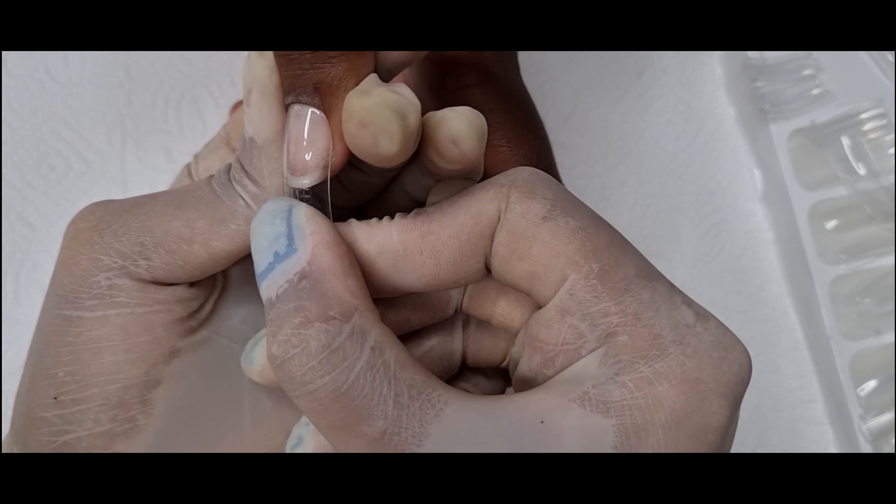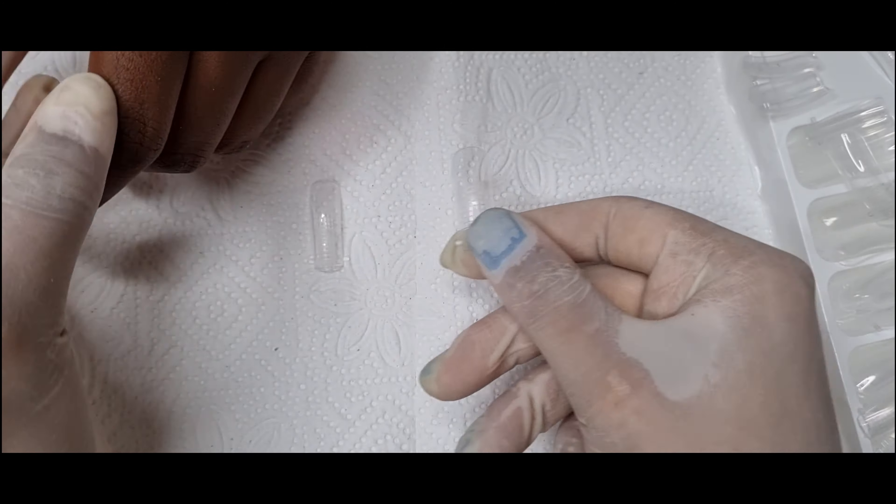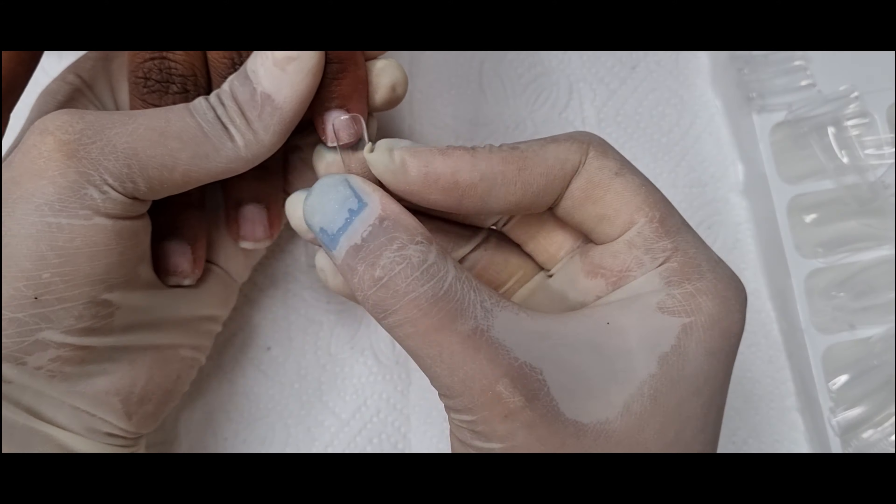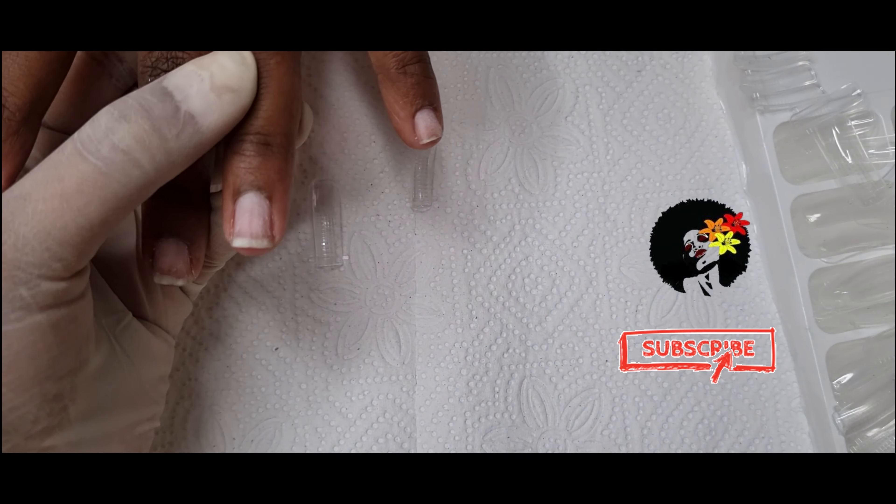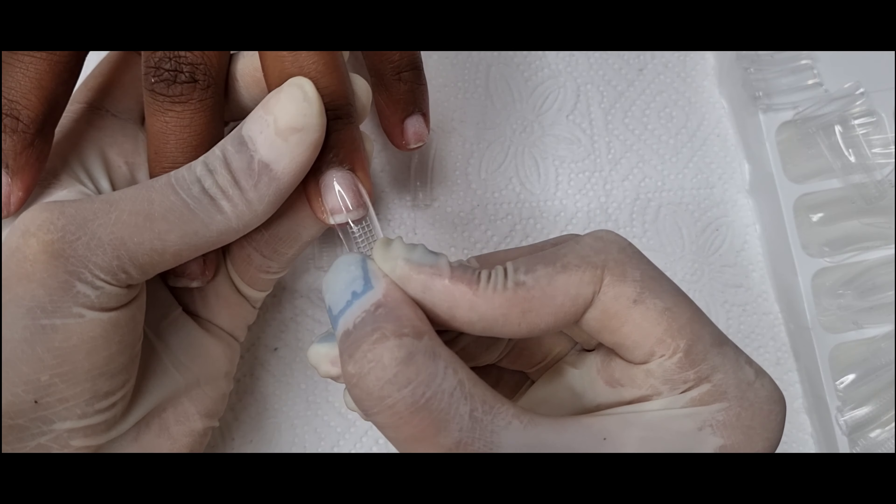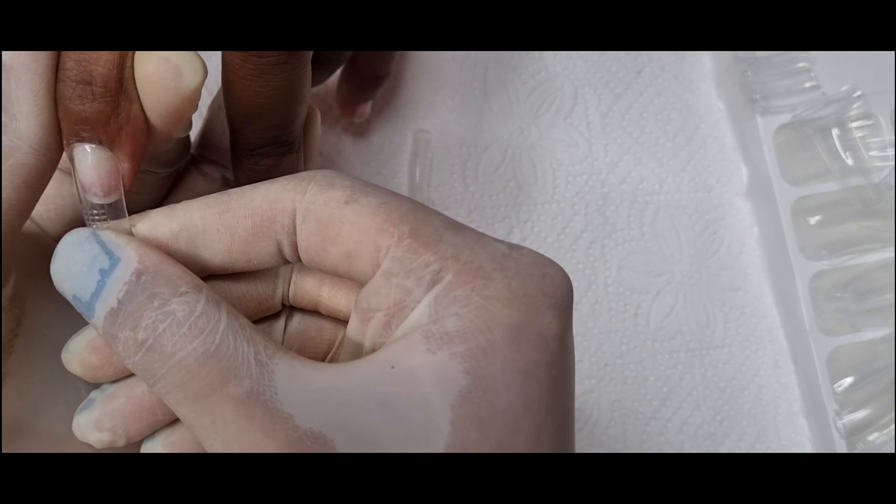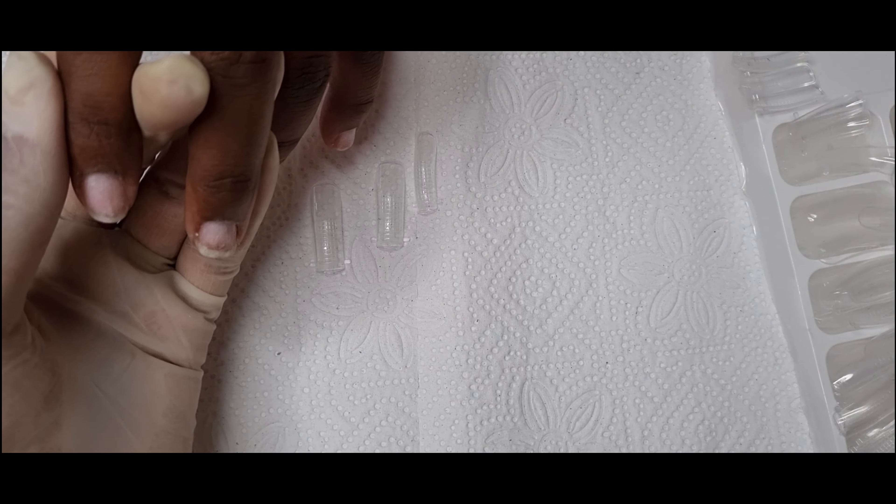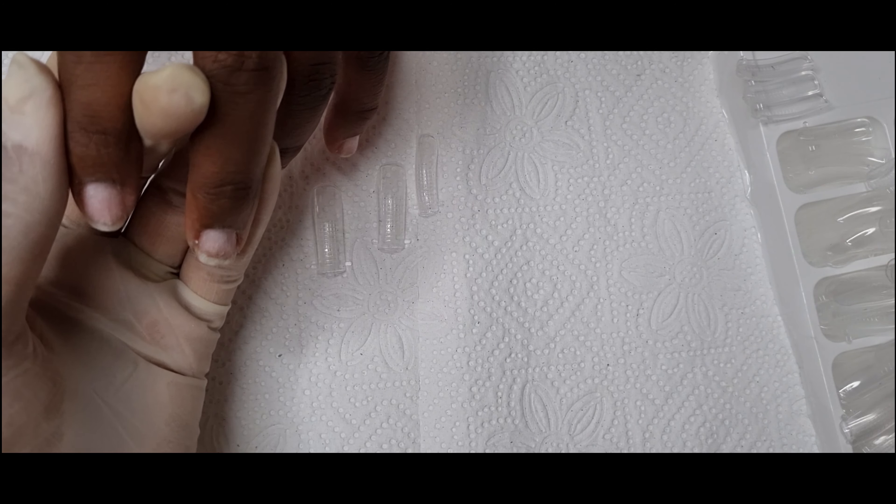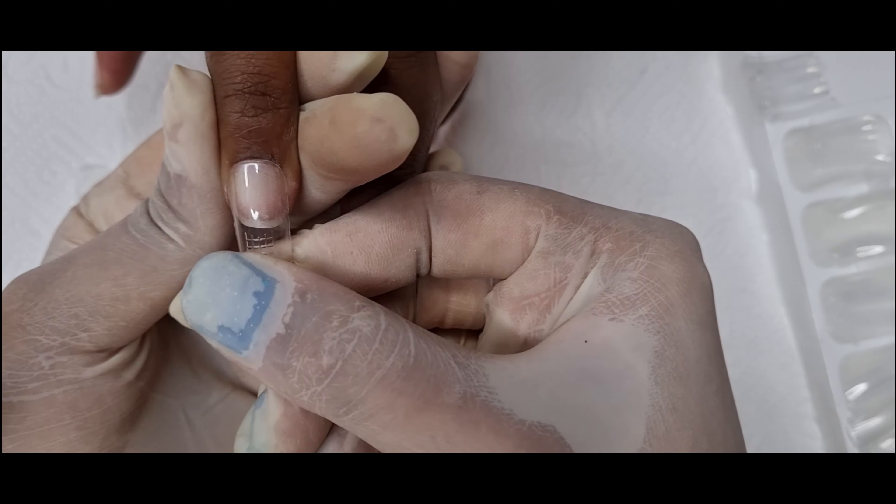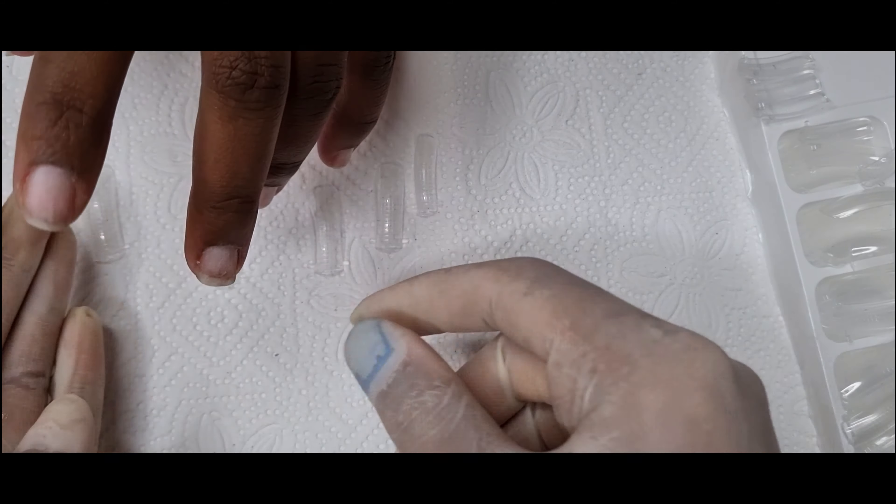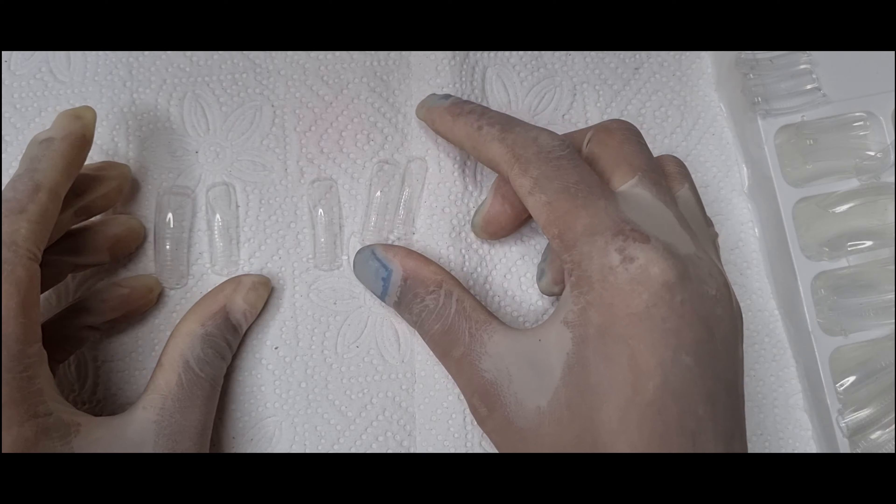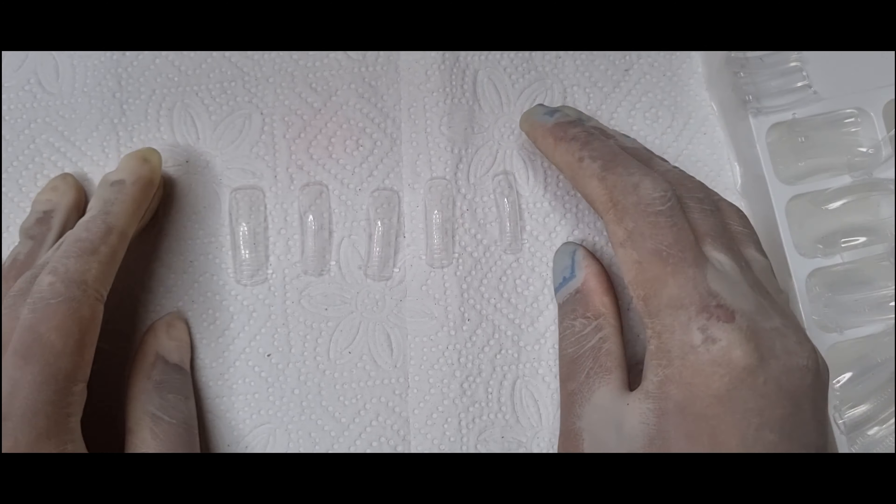Just make sure that the dual form fits the nail from end to end. And also when you look at the nail at an angle, make sure that there is space between the natural nail and the dual form. So this will allow space for the poly gel to sit. You don't want to take sizes where the dual form is in contact with the natural nail because you will find yourself with very thin nails.